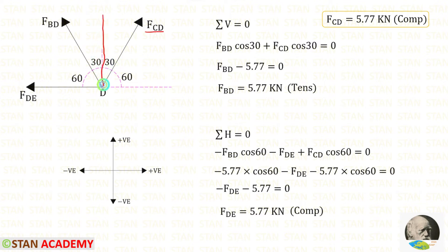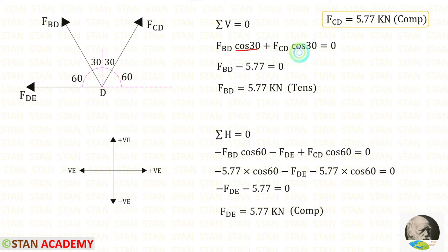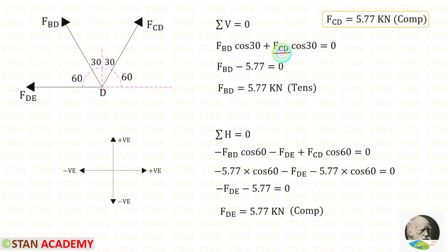Cos 30 is common, so we can take it outside. On the right side, 0 divided by cos 30 gives 0. We know the value of FCD is 5.77 and it is compressive, so we apply FCD as negative. Finally for FBD we will get a positive value, meaning it is tensile.